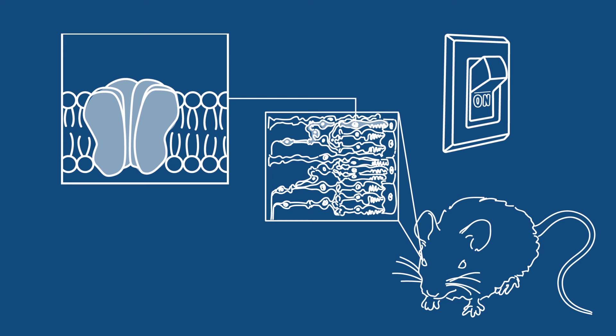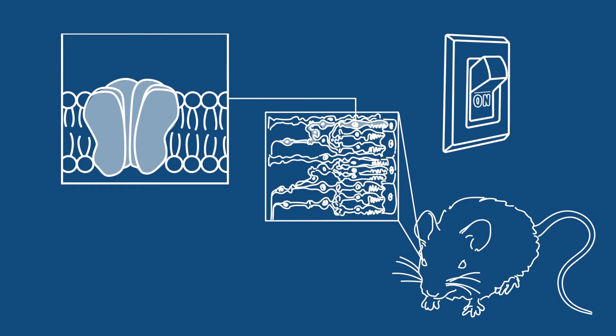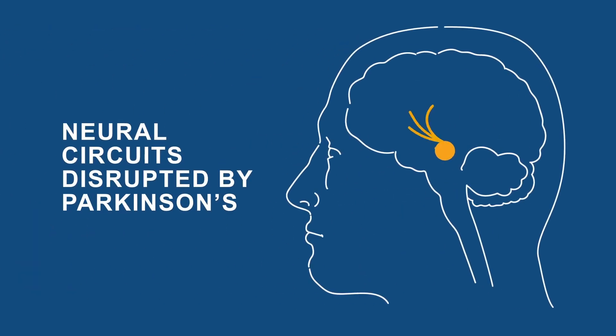And the technique could also revolutionize our understanding of a number of neurological disorders. In Parkinson's disease, for example, the loss of dopamine-producing cells results in the overstimulation of some neurons and the understimulation of others.